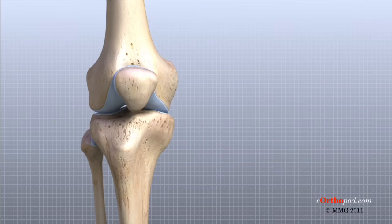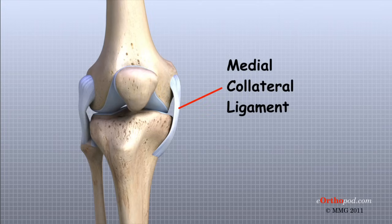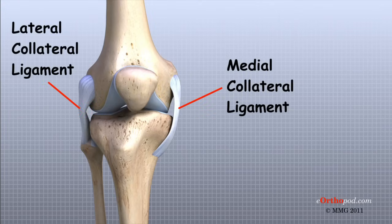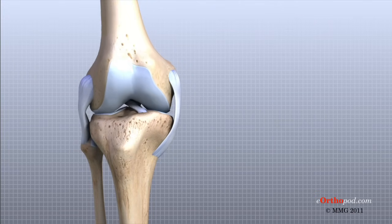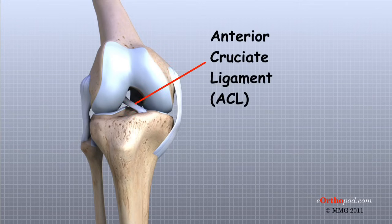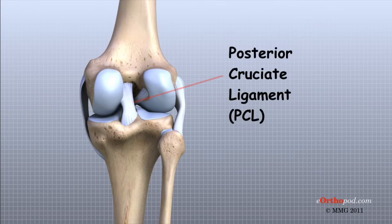Ligaments are tough bands of tissue that connect the ends of bones together. Two important ligaments are found on either side of the knee joint: the medial collateral ligament, or MCL, and the lateral collateral ligament, or LCL. Inside the knee joint, two other important ligaments stretch between the femur and the tibia: the anterior cruciate ligament, or ACL, in front, and the posterior cruciate ligament, or PCL, in the back.